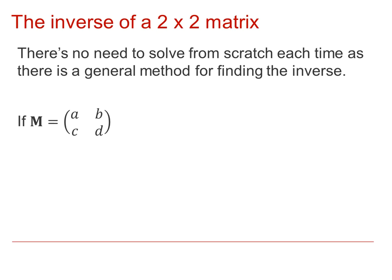We don't need to go through that process of simultaneous equations each time, so we have this general rule that says that the inverse of the matrix is equal to 1 over the determinant of the matrix, multiplied by a matrix where we've swapped the leading diagonal, and changed the sign on the other diagonal, where the determinant of M is the product AD minus the product BC.